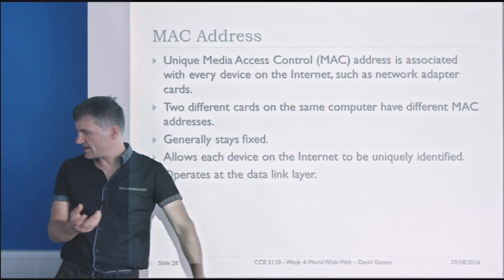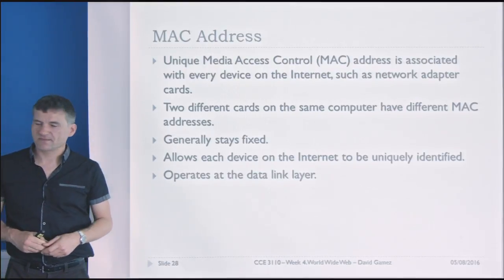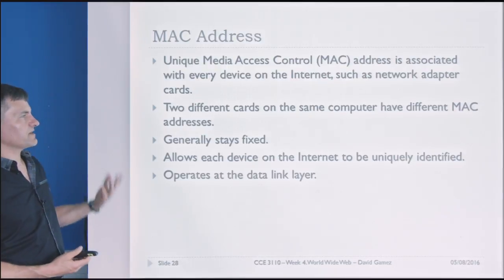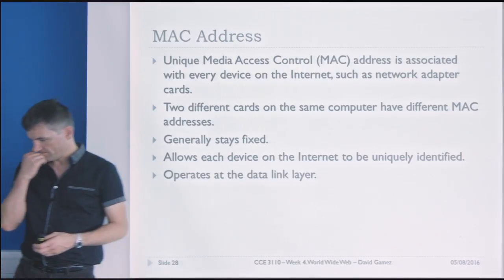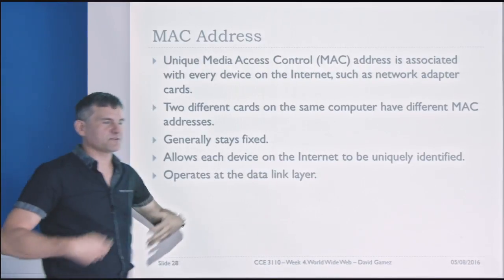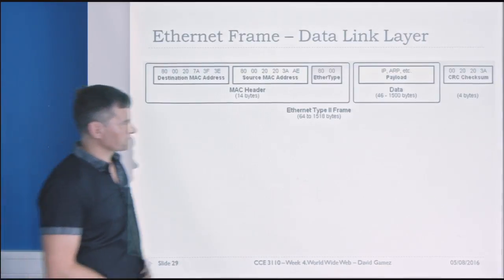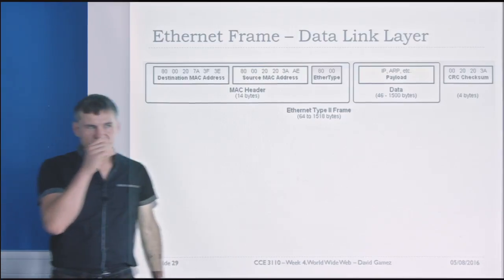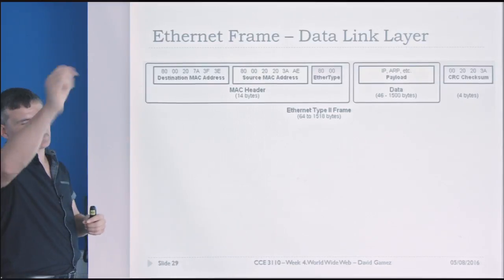A MAC address is called a Media Access Control address, and every single machine on the Internet in theory has its own unique MAC address — though you can spoof it. If you've got two network cards on a computer, each one will have a unique MAC address. It allows each device on the Internet to be uniquely identified so that we can shuffle packets between individual machines and routers across Wi-Fi and so on. If I want to send a packet from my computer to the local Wi-Fi router, that'll be one hop using the data link layer, and then it'll rewrite the header to send it on to the next hop.